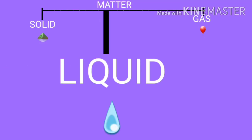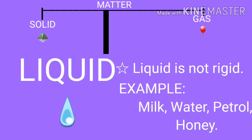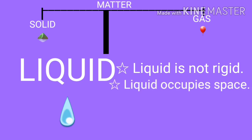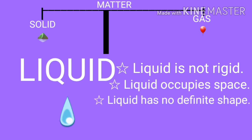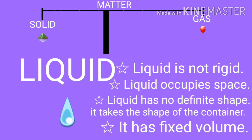Next one is liquid. Liquid is not rigid. For example, milk, water, petrol, honey — these are some examples of liquid. Liquid occupies space. Liquid has no definite shape; it takes the shape of the container. It has fixed volume.